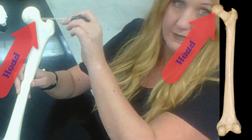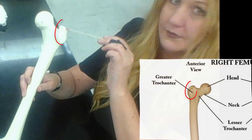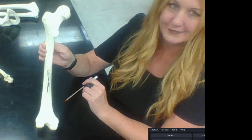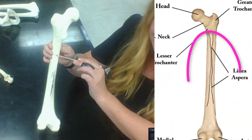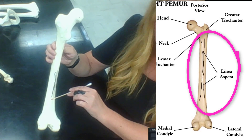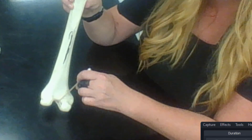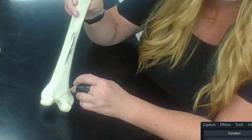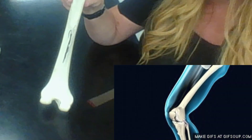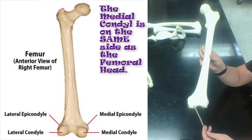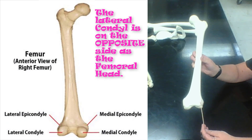The femur has a head, a neck, a greater trochanter, and a lesser trochanter. There is also a faint line on the posterior surface called the linea aspera. To determine anterior versus posterior orientation, look for the large intercondylar fossa — the pronounced deep indentation at the back of the knee — which indicates the posterior aspect. The head of the femur must point medially when in anatomical position, and the distal end has a medial condyle.